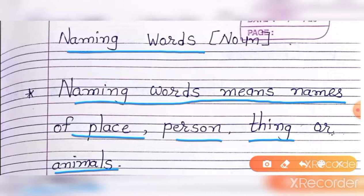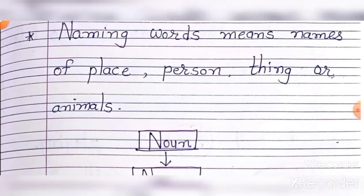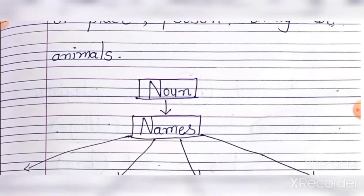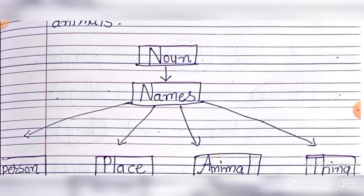Place means a place. Person means a person. Thing means a thing. Animals means animals. Naming words. Noun means name.